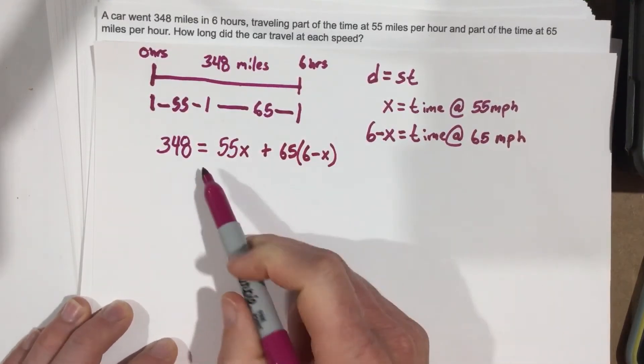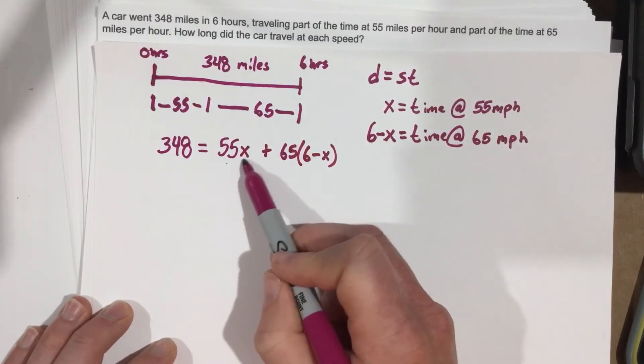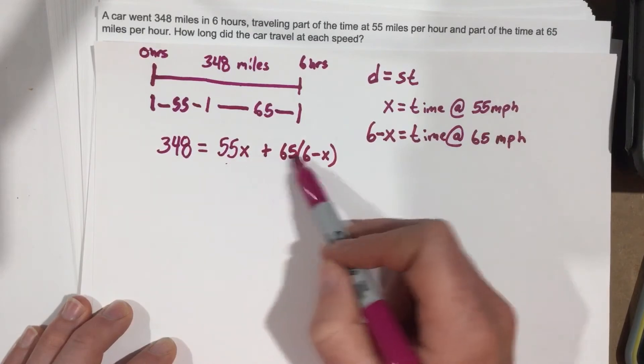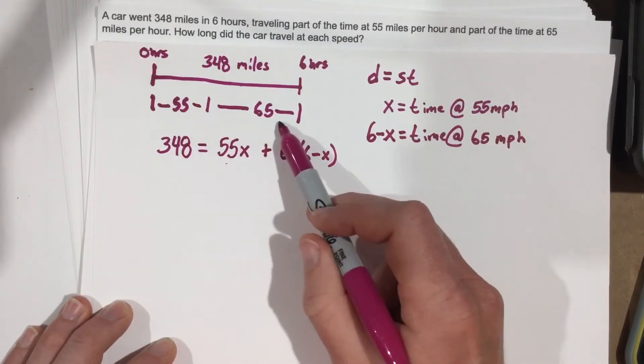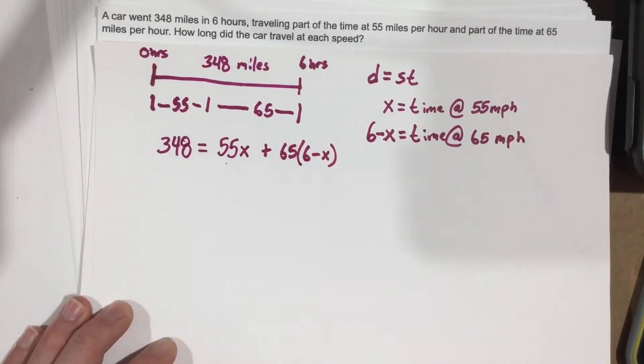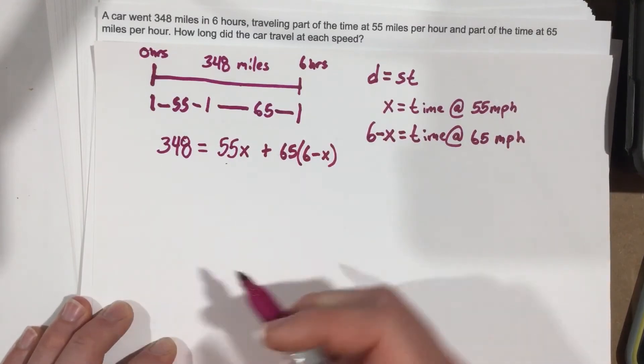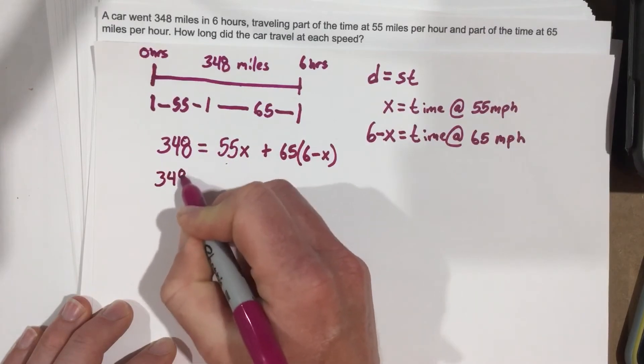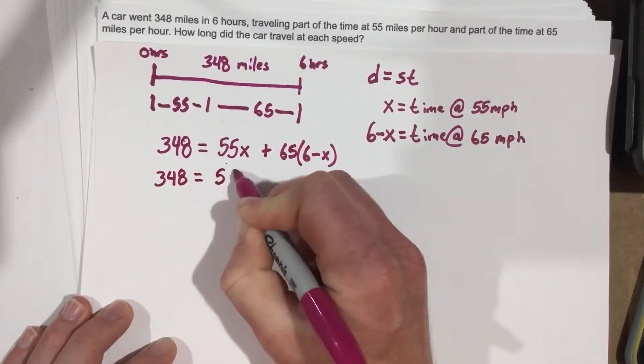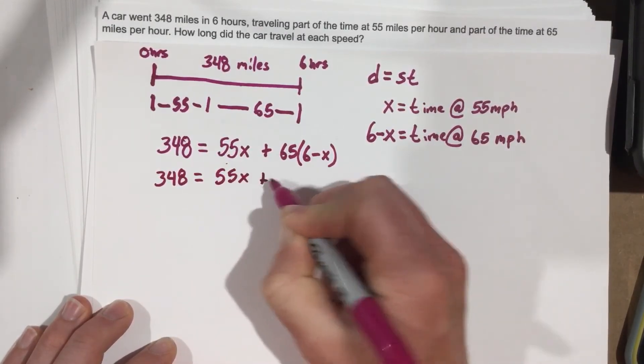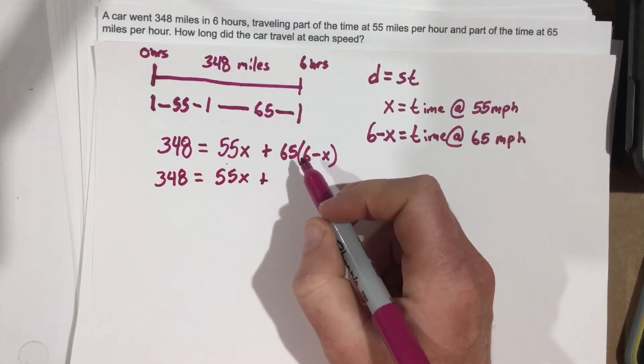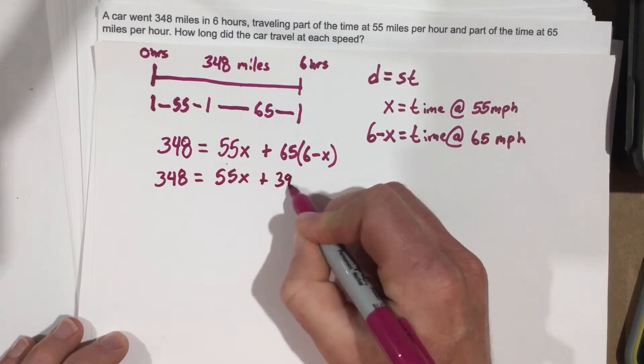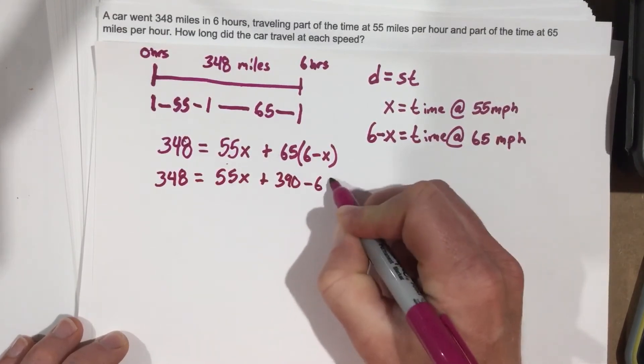So as you can see here, we have a speed times a time plus another speed times its time. And when you add those two things together, just like you see it here, you'll get the total distance. D equals S times T. Let's go ahead and distribute then. So we have 348 equals 55X plus 65 times 6 gives you 390 minus 65X.